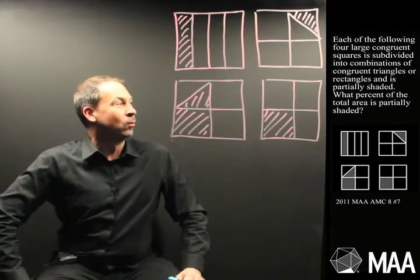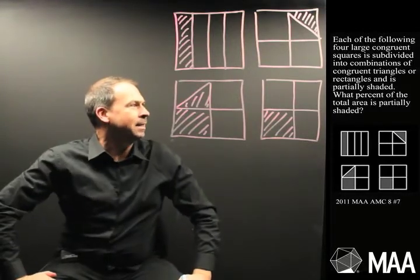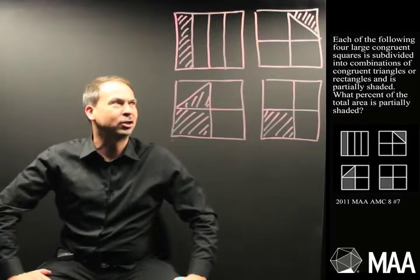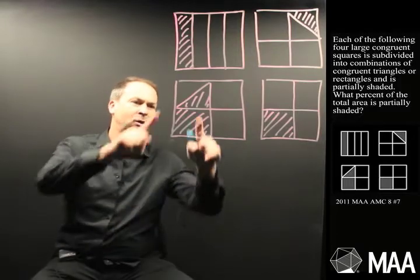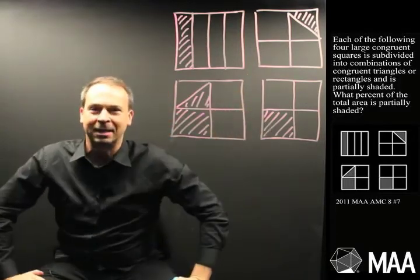Each of the following four large congruent squares, these ones here, is subdivided into combinations of congruent triangles or rectangles and is partially shaded. Okay, so subdivided into rectangles and squares as well, but I guess squares are rectangles, and some triangles, and yep, stuff is indeed partially shaded.